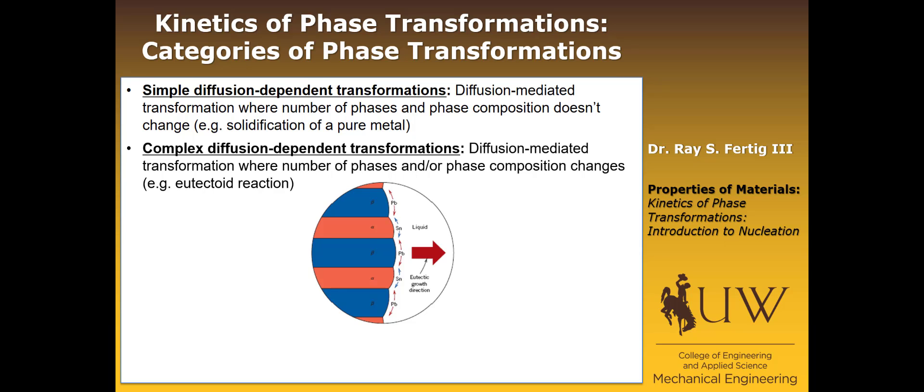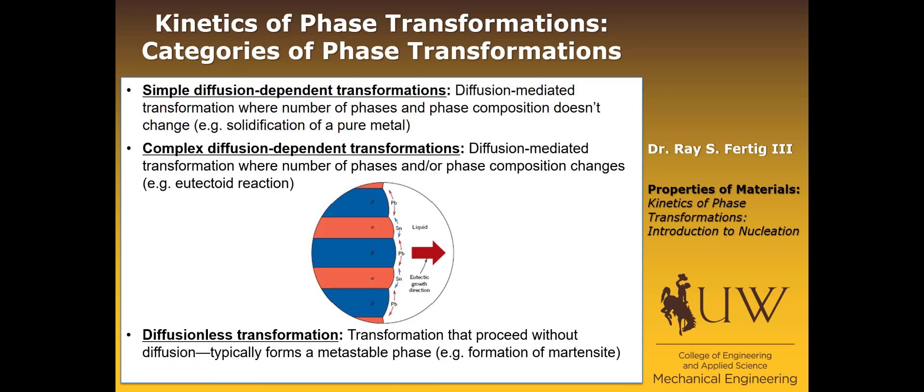That would be one more level of complexity. And then finally, there's a type of transformation called the diffusionless transformation that proceeds without any diffusion. This typically forms a metastable phase, and we're going to see this in the formation of martensite in steels. So those are the three types that are important to be aware of.